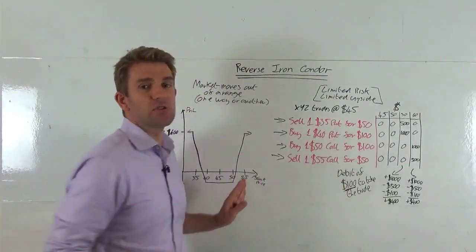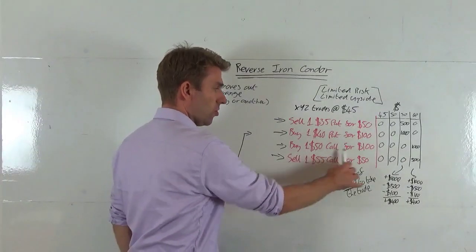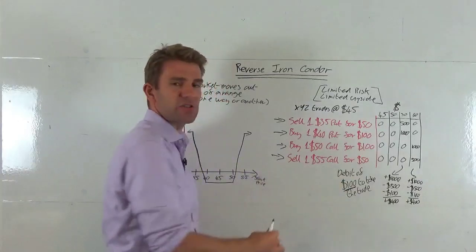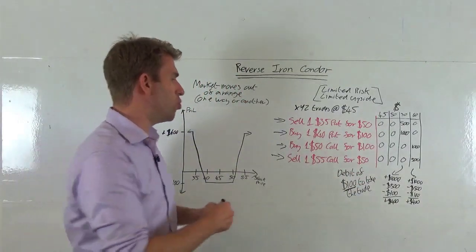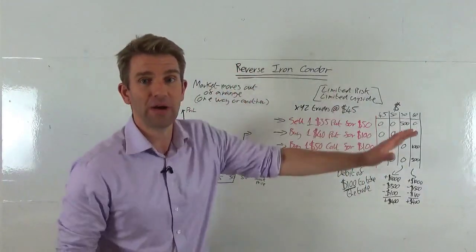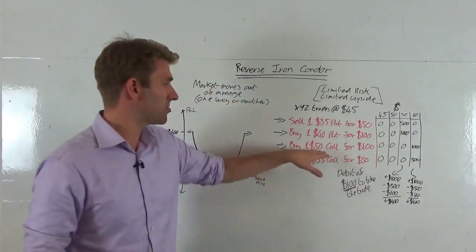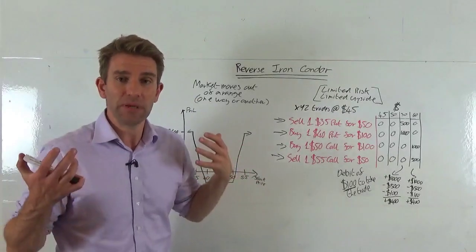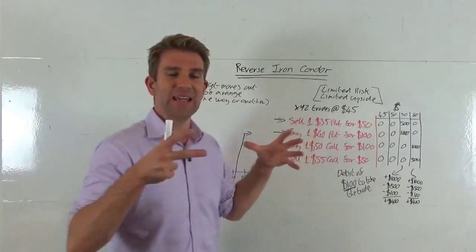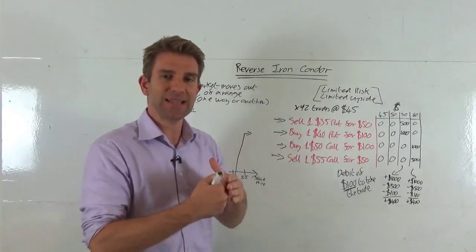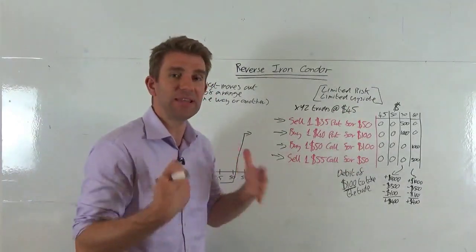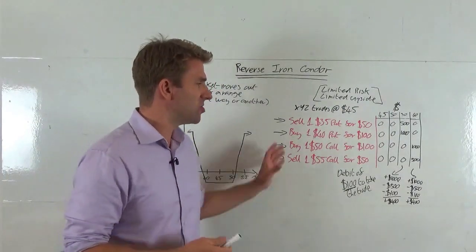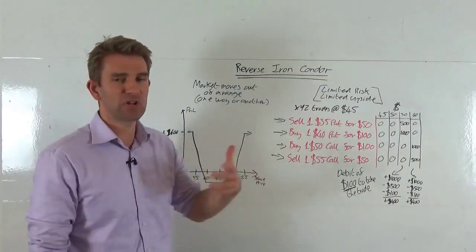Even if the stock goes really high, the $50 call gains more value — but anything above $55 is offset by losses on the sold $55 call leg. So you can see that without those sold options, if the stock went to $70 you'd be making $2,000 on the call alone. The reverse iron condor locks in that precise range you want to achieve — it limits the downside. You halve the risk, and the risk-reward ratio changes significantly, so you can take the trade more often.